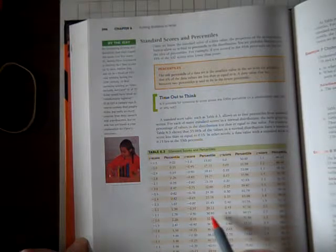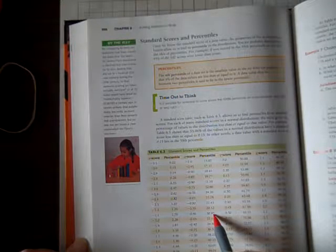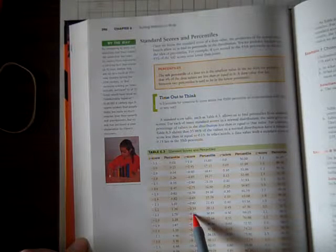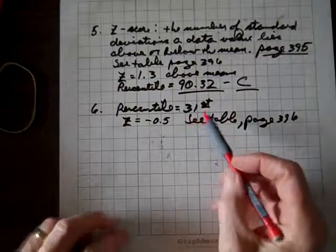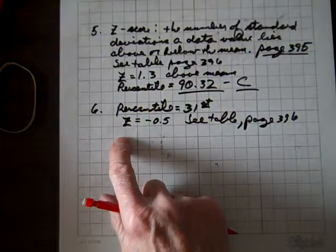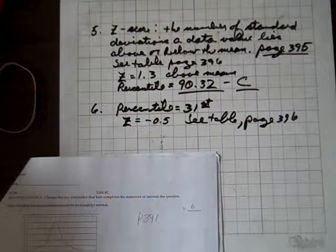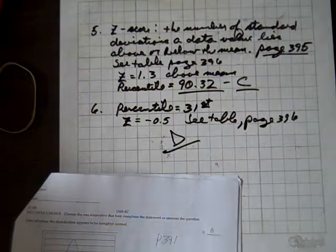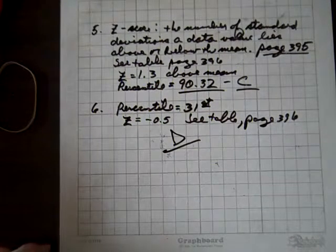Here it is, 30.85, and the corresponding Z score is to the left of it, and that's negative 0.50. So, Z is negative 0.5, and D is the appropriate answer. And see that table, page 396, and we're done with the first part.